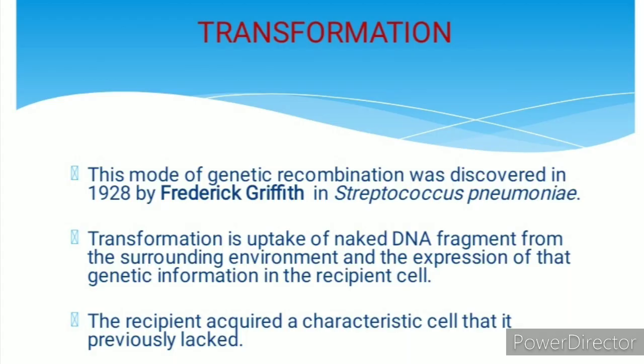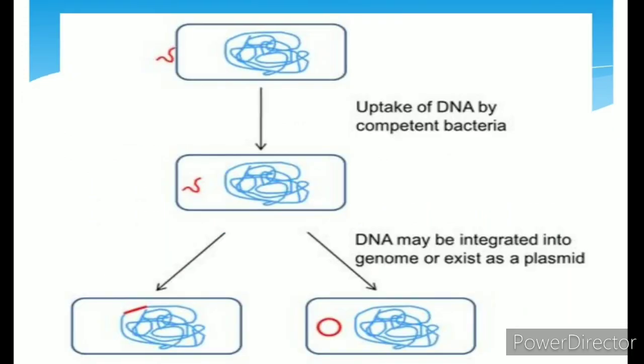Transformation: this mode of genetic recombination was discovered by Frederick Griffith in 1928 in Streptococcus pneumoniae. Transformation is the uptake of DNA fragments from the surrounding environment and the expression of that genetic information in the recipient cell, where the recipient cell acquires a new character that it previously lacked.